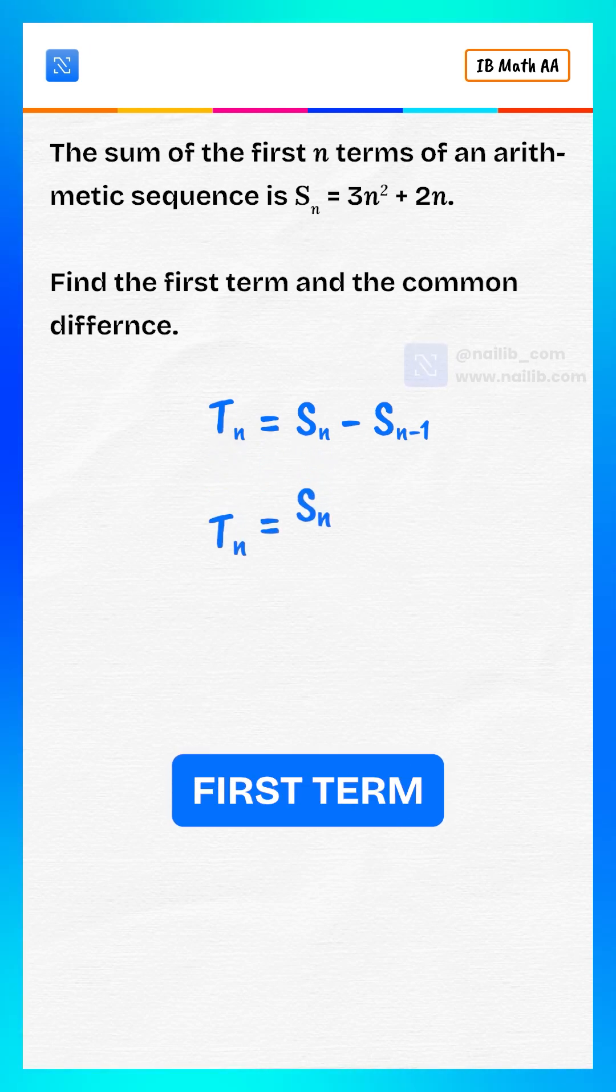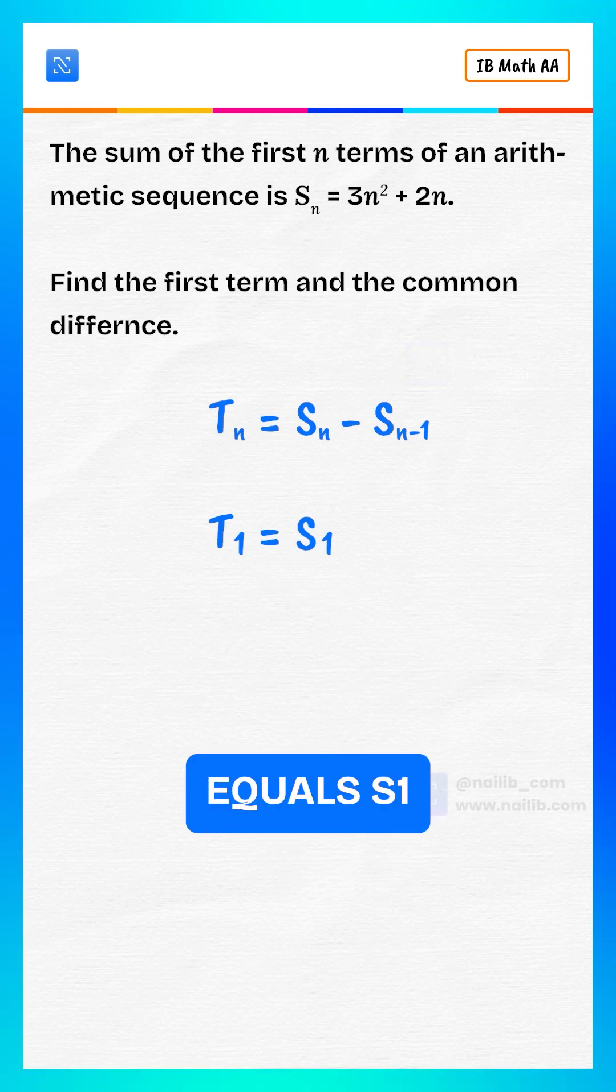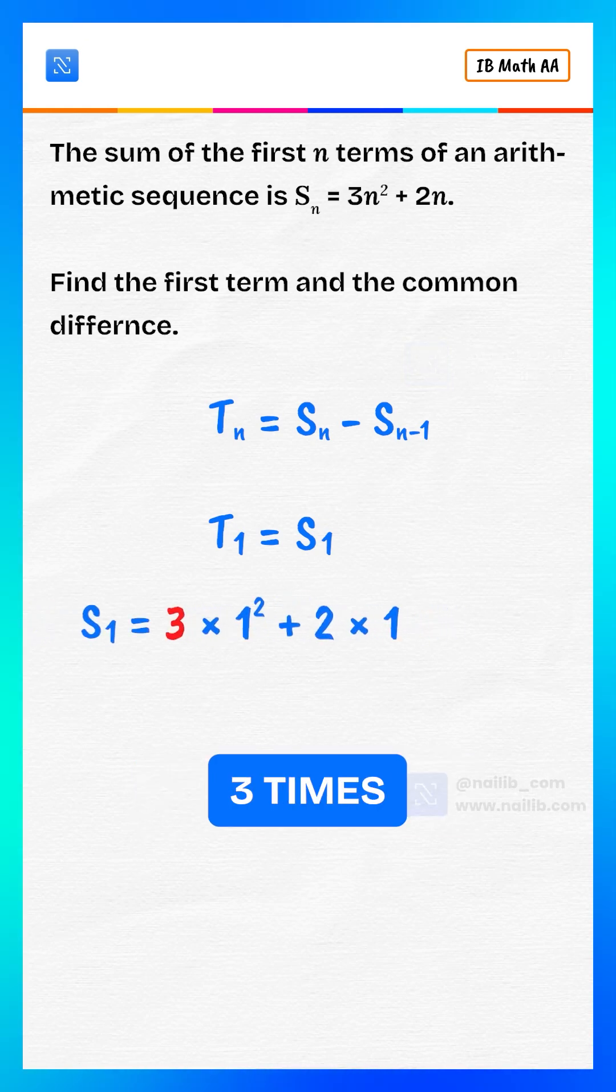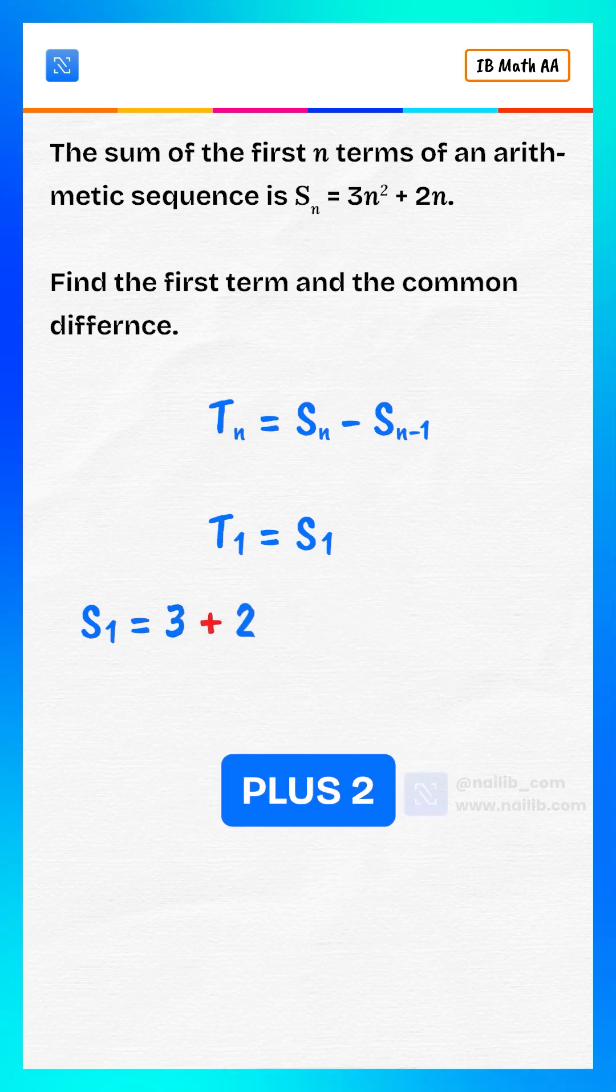For the first term T1, put n equals 1. So T1 equals S1, and S1 equals 3 times 1 squared plus 2 times 1. That's 3 plus 2, which equals 5.